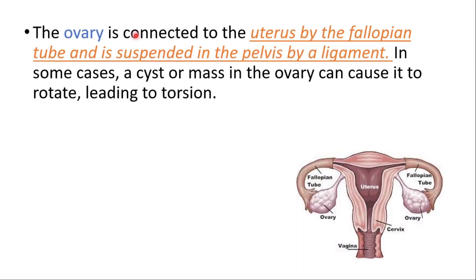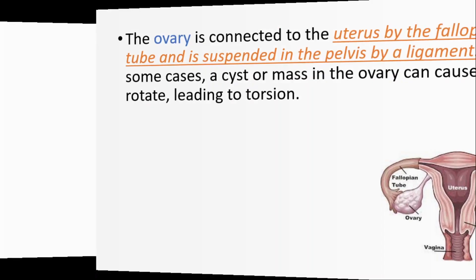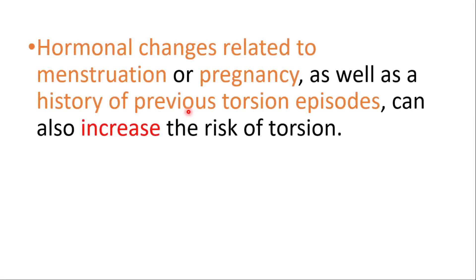The ovary is connected to the uterus by the fallopian tube and is suspended in the pelvis by a ligament. In some cases, a cyst or mass in the ovary can cause it to rotate, leading to torsion. Hormonal changes related to menstruation or pregnancy, as well as a history of previous torsion episodes, can also increase the risk.